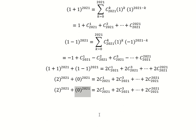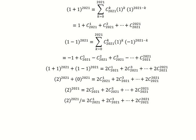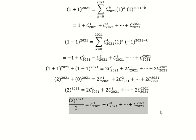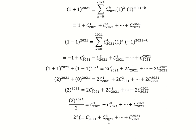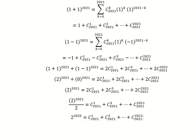Then we divide both sides by 2. So this one we have 2 to the power of 2021 minus 1. We simplify and we have the final result like this. And this is the answer for the question. This is the end. Thank you for watching.